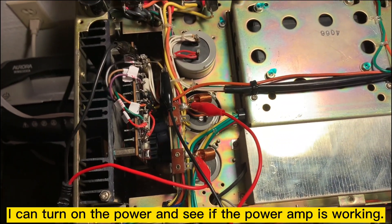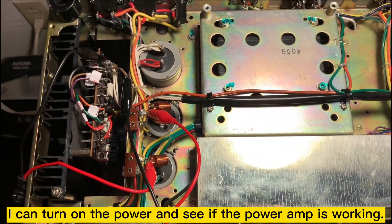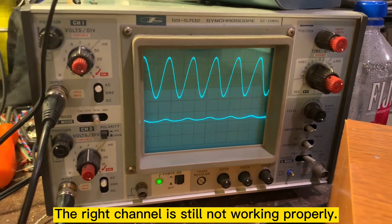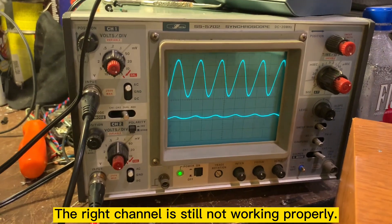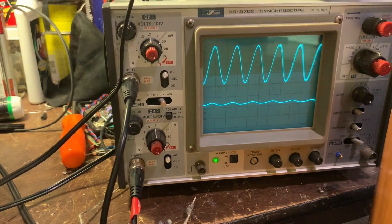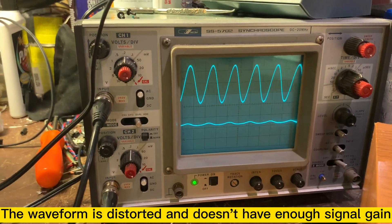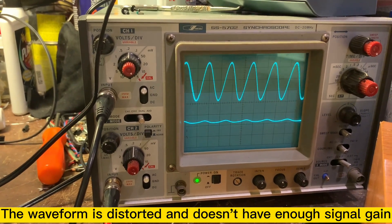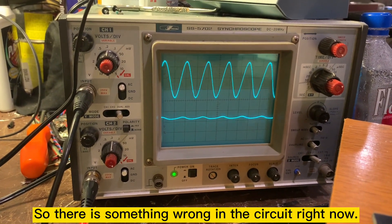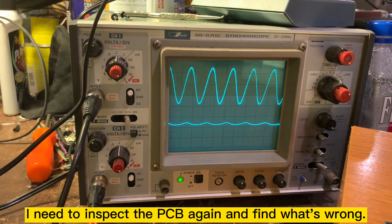So we can turn on the power and see if the power amp is working or not. So the right channel, still the waveform is distorted and also the gain of the amplifier is so little right now. So something is wrong. I need to inspect the PCB again.